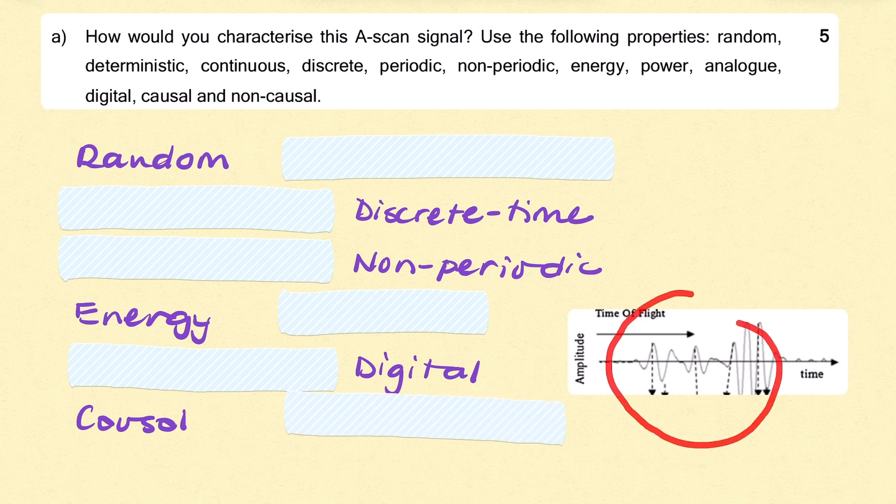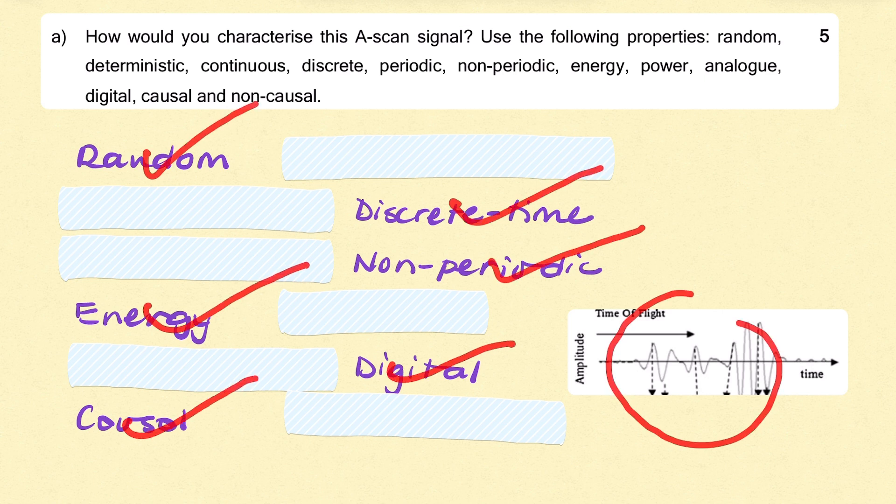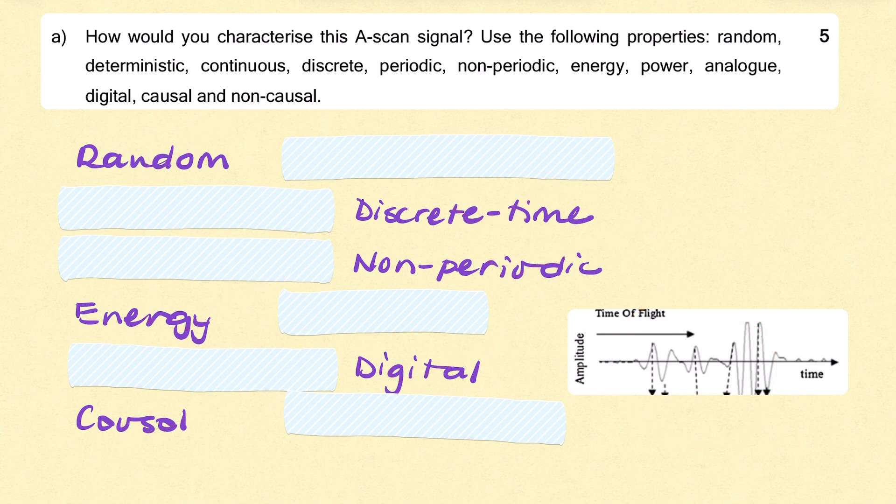So the way you describe this signal is it's a random, discrete time, non-periodic energy, digital, causal signal. So that's what you would need for the five marks.